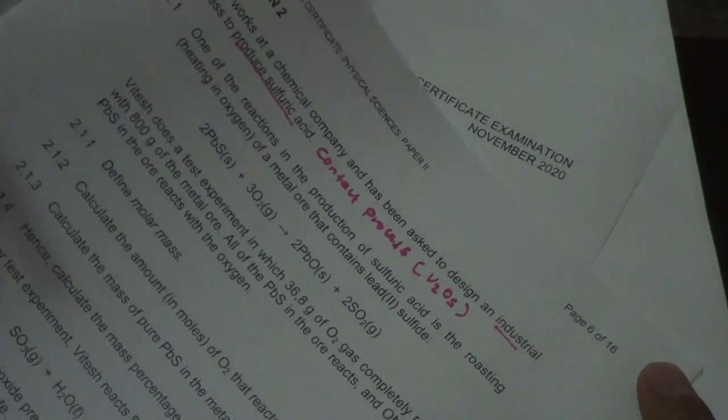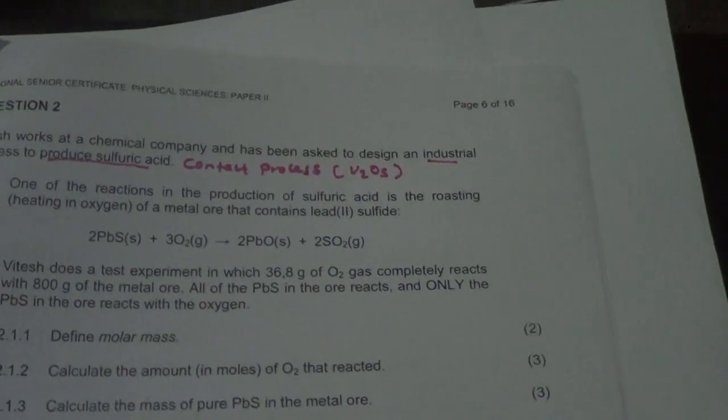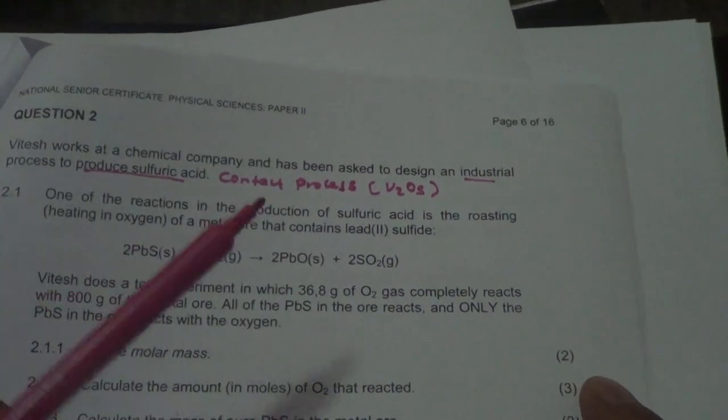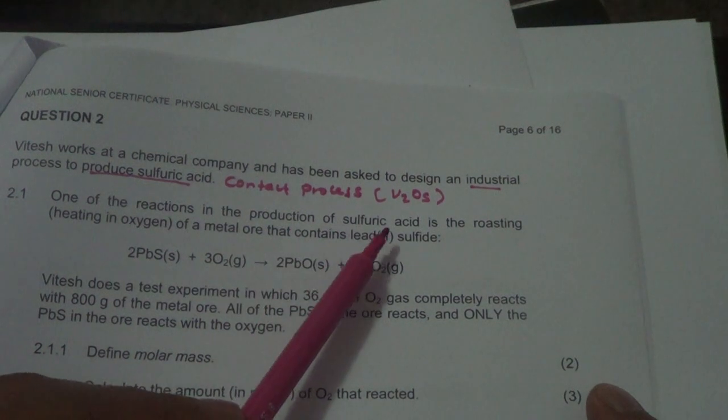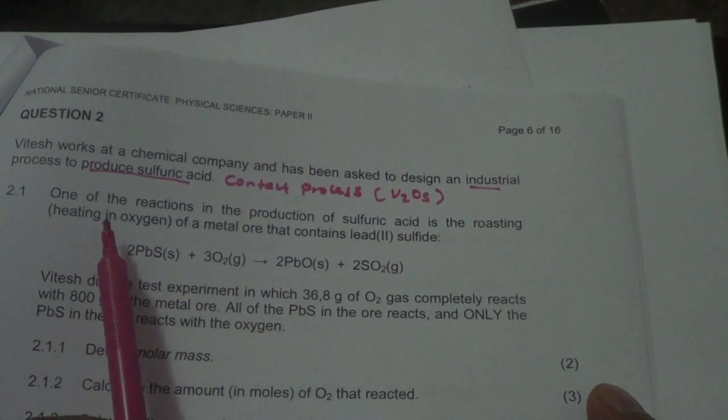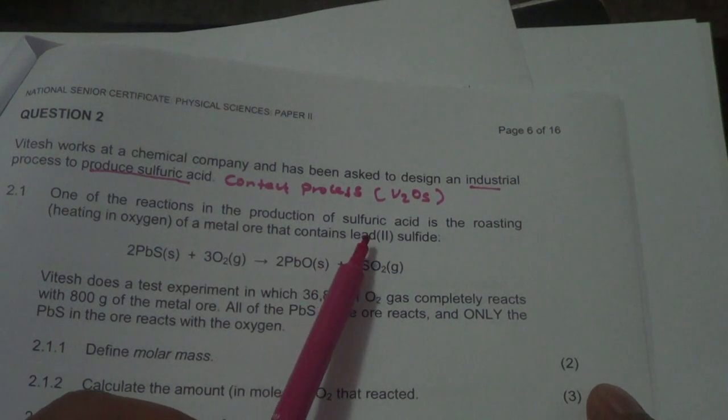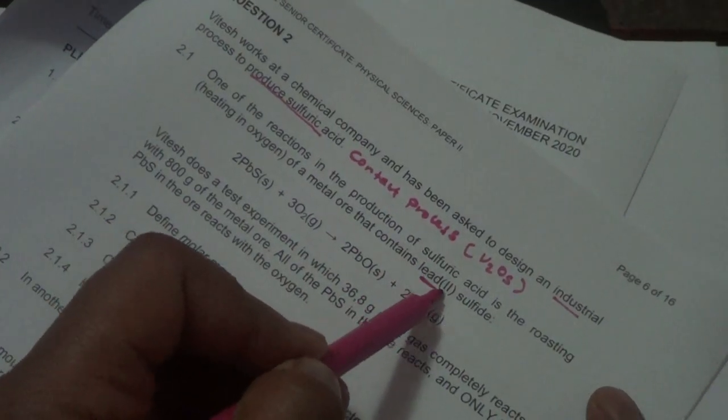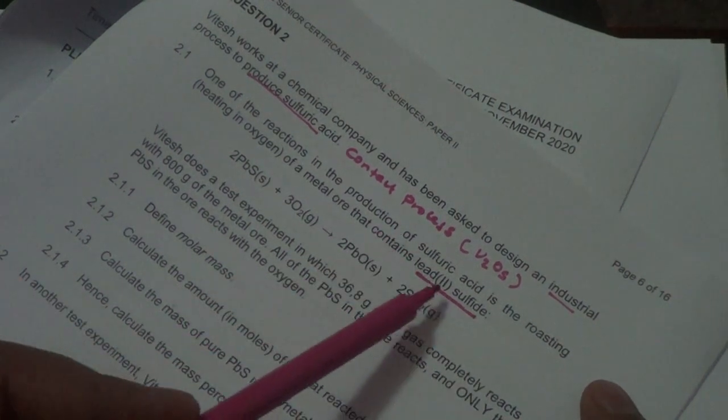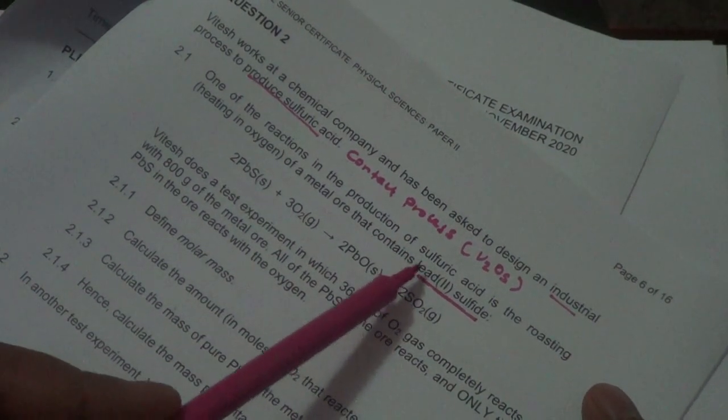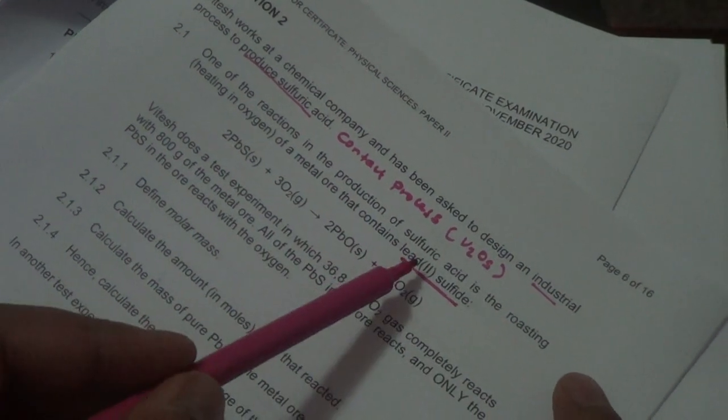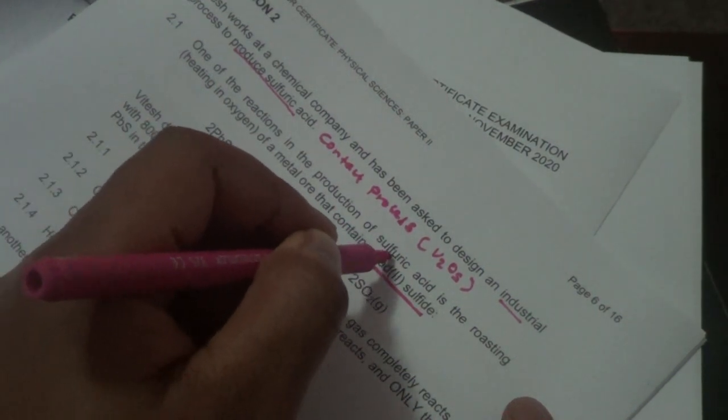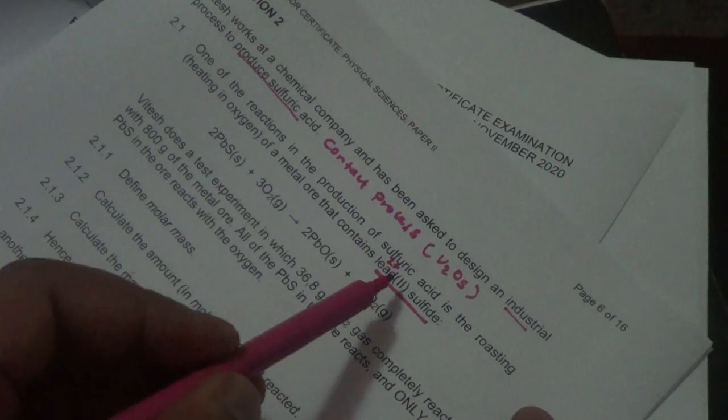Let's keep moving and see how far we can go. Now we are told one of the reactions in the production of sulfuric acid is the roasting, that is heating in oxygen, of a metal ore that contains lead(II) sulfide. You have a particular way of writing once you see these roman numerals following some metal. It tells you its oxidation state, so the oxidation state of lead is 2+.